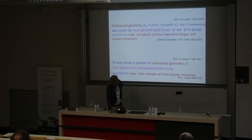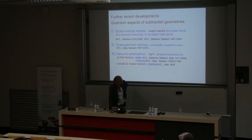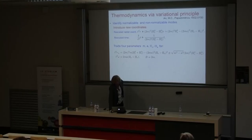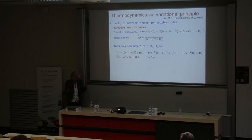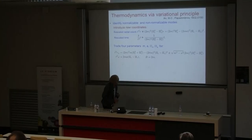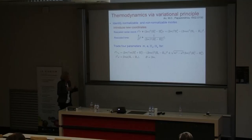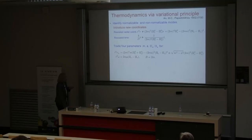What people object to in this approach — and not many people continue working on it — is that this is not the original black hole: it has the same classical horizon properties, but it is a new asymptotic solution. So the question is whether we really explain the full-fledged black hole or just adjust the box in a way to get manifest conformal symmetry. I spent most of my time explaining subtracted geometry, and now I have little time to address its thermodynamics, which was the key point.